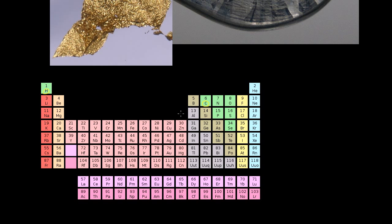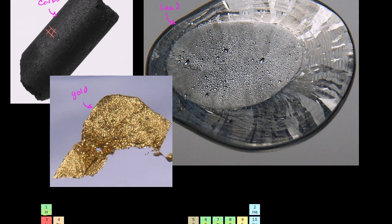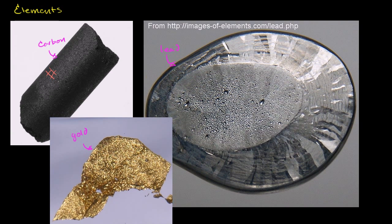All of our elements are listed here in the periodic table of elements. C stands for carbon. Over time you'll probably familiarize yourself with all of these. This is oxygen. This is nitrogen. This is silicon. Au is gold. This is lead.